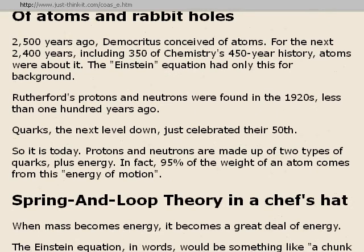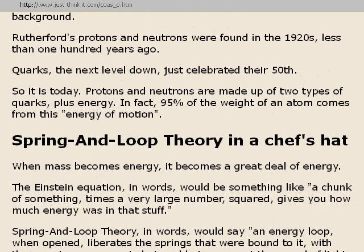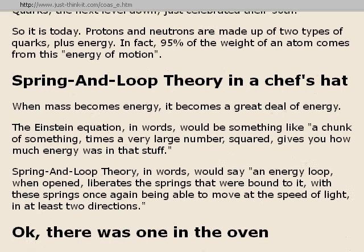Spring and loop theory in a chef's hat: when mass becomes energy, it becomes a great deal of energy. The Einstein equation, put into simple words, would be something like: a chunk of something times a very large number, squared, gives you how much energy was in that stuff. Spring and loop theory in words would say: an energy loop, when opened or unrolled, liberates the springs that were bound to it, with these springs once again able to move at the speed of light in at least two directions.